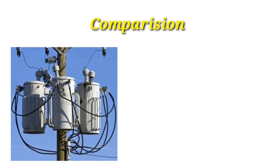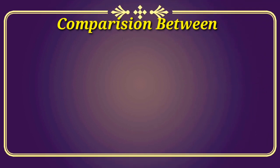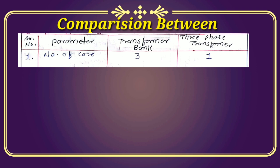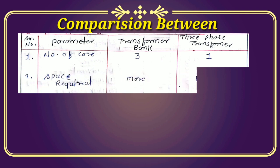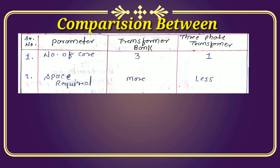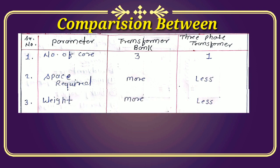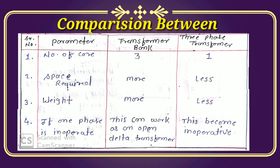Now let's compare the transformer bank and the three-phase transformer. First point — number of cores: in a transformer bank we use three cores, while in a three-phase transformer we use only one core. Second — space required: the transformer bank requires more space, while the single unit transformer requires less space. Third — weight: the bank has more overall weight compared to the single unit three-phase transformer. Fourth — if one phase is inoperable: the transformer bank can still work as an open-delta transformer, but the single unit three-phase transformer becomes completely inoperable.